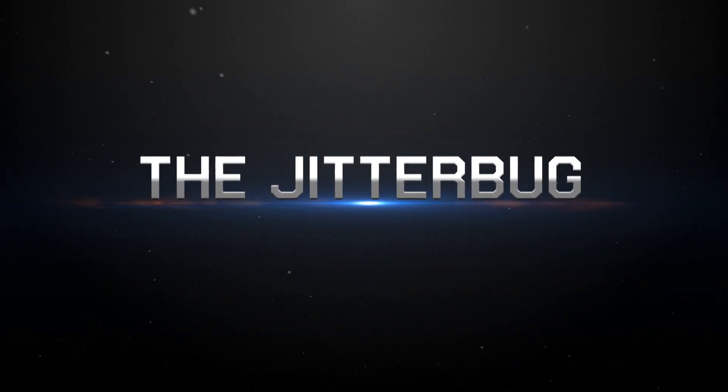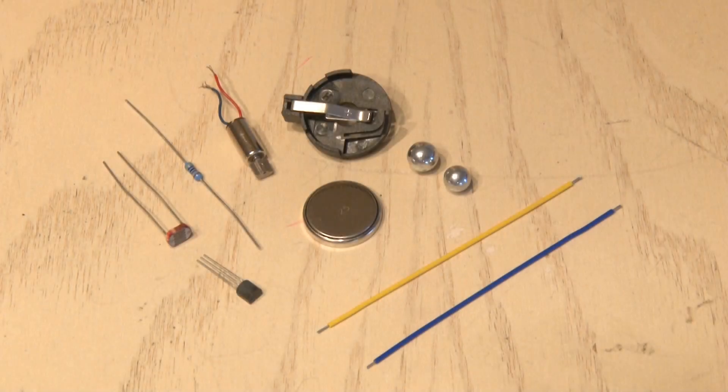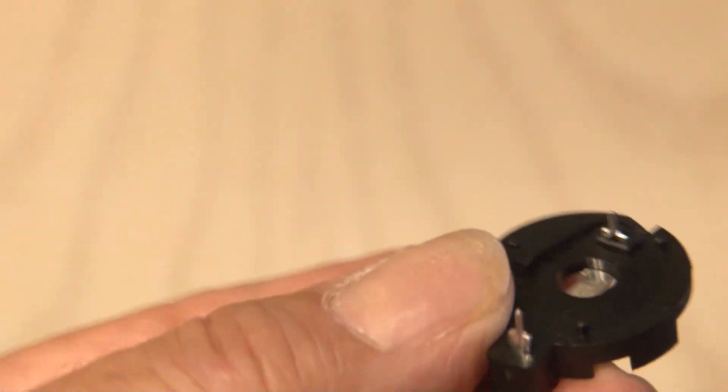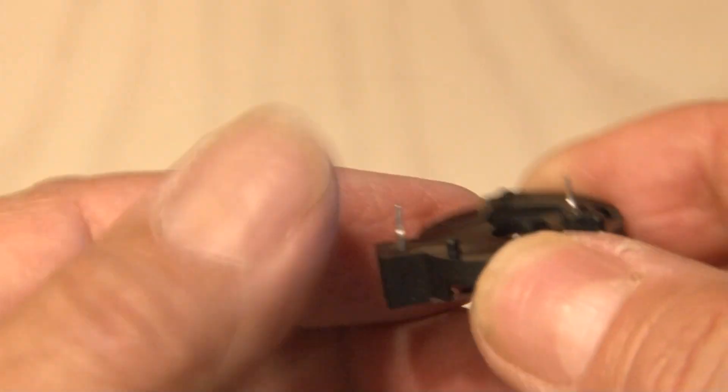To make the jitterbug you're only going to need a few components, some of which you may have around the house and don't even know it. Everything will be powered with a button cell battery, so you're going to need a button cell battery holder.